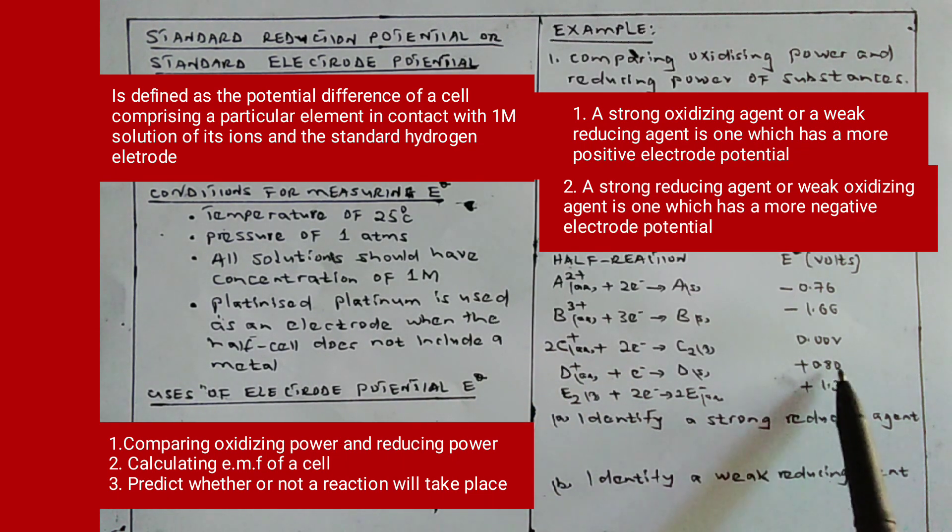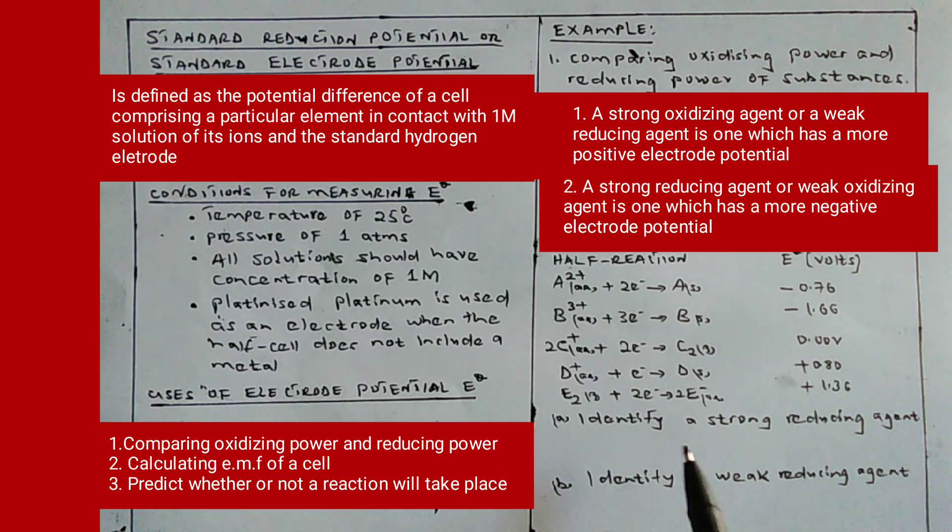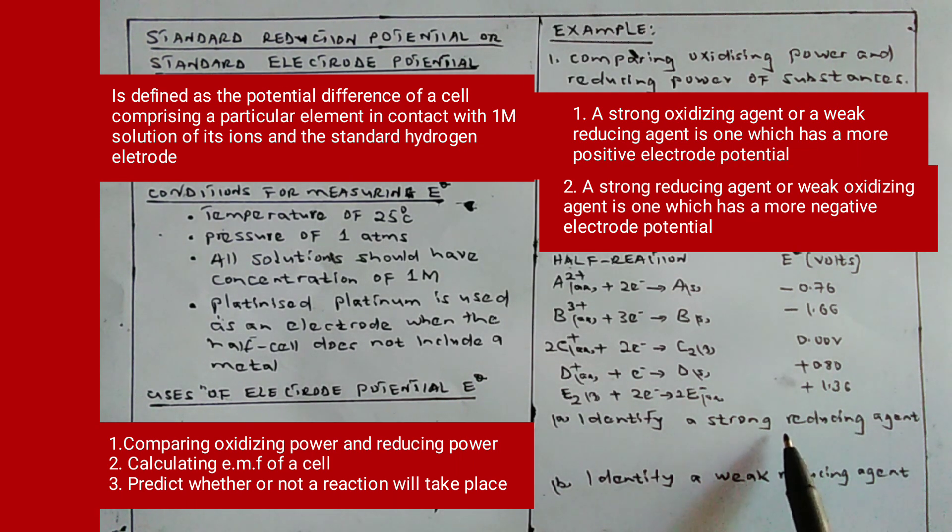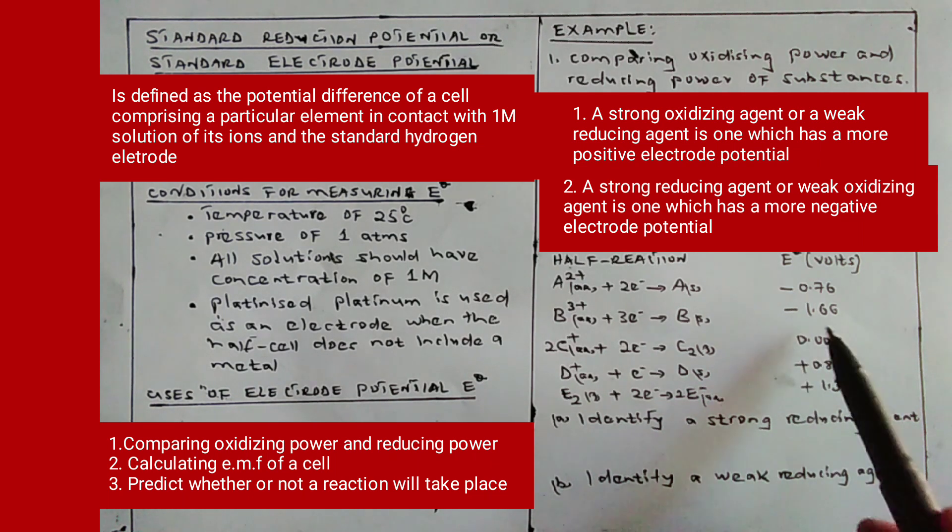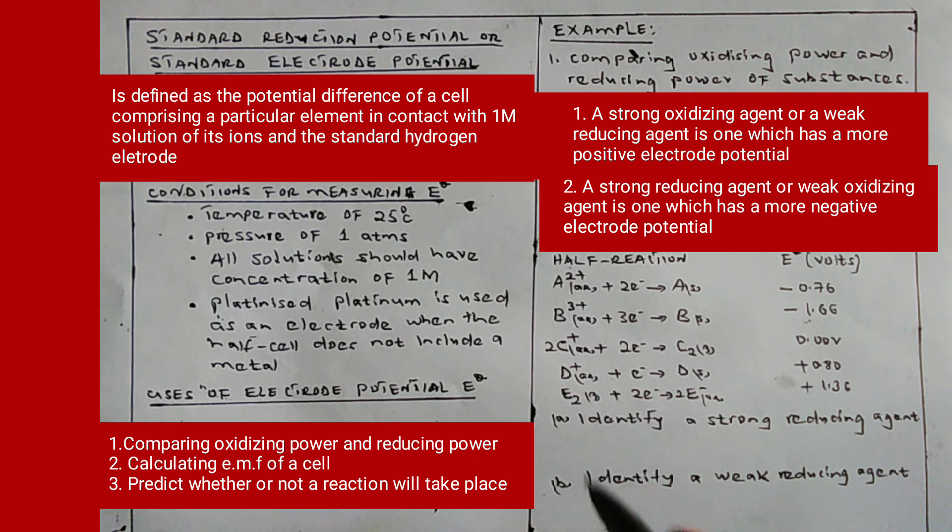Looking at the example, identify a strong reducing agent. A strong reducing agent is one which has a more negative electrode potential. Among all these elements, the most negative is negative 1.66, so my answer will be B.